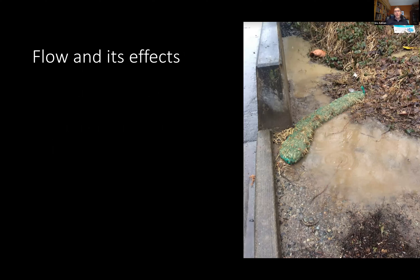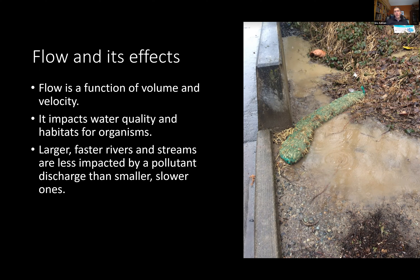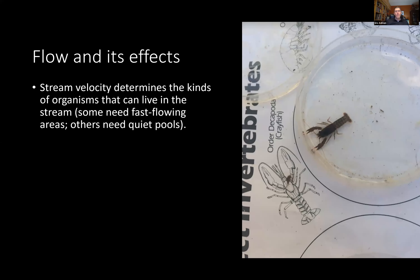The effects of flow within the stream depend on how much there is and how fast it's going. High runoff with unstable banks can cause turbidity, affecting habitat for what lives in the stream. Larger, faster rivers are less impacted by a small pollutant discharge than smaller, slower ones. Flow also determines the types of organisms that can live in a creek — some prefer fast-flowing areas, others prefer slower-flowing areas.